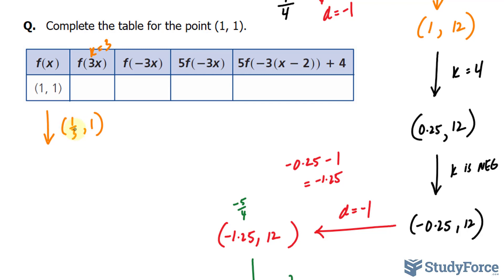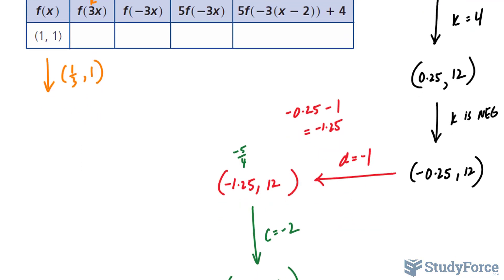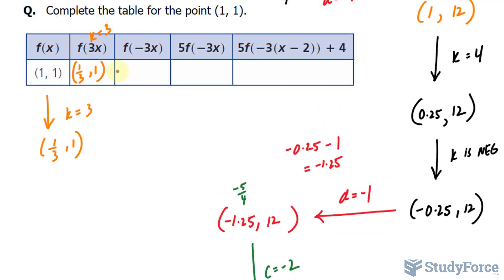I prefer that you write it down as a fraction as opposed to 0.33 because then you will be introducing rounding errors, and that might not be good as you continue. In the next column, they want us to apply a k value being negative, sort of the same as the previous question. So if k is negative, we have a reflection about the y-axis, and that means this becomes negative a third and 1.